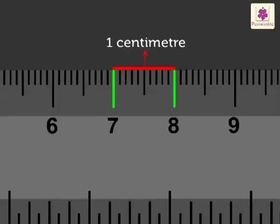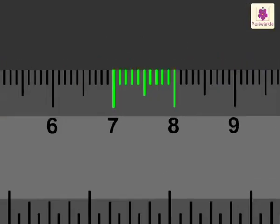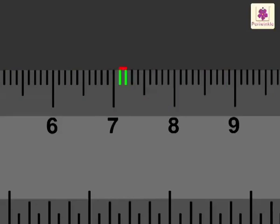Each centimeter is further divided into ten smaller divisions. Each division is equivalent to one-tenth of a centimeter. It is called one millimeter.